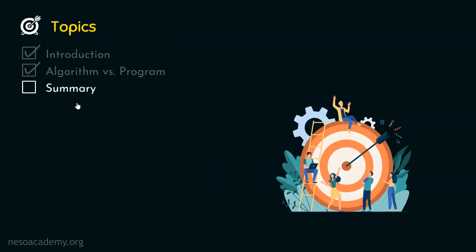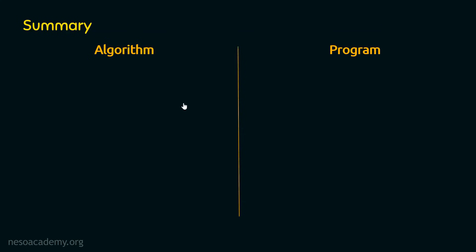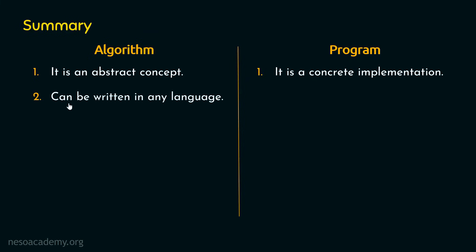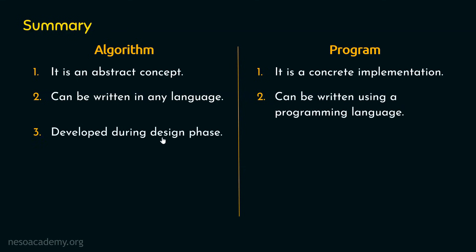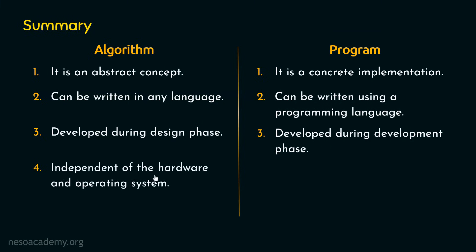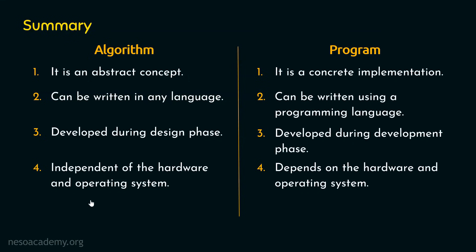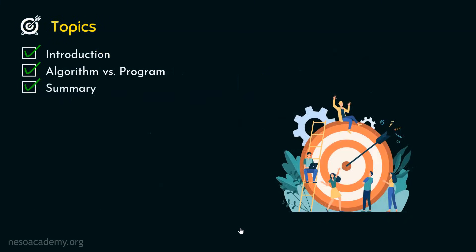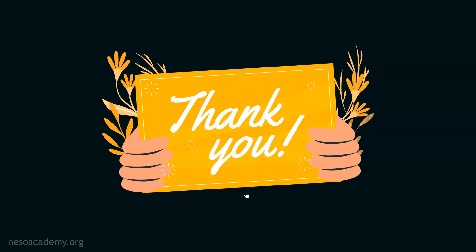Let's move to the summary of this lecture. An algorithm is an abstract concept; a program is a concrete implementation. An algorithm can be written in any language; a program must use a programming language. An algorithm is developed during the design phase; a program during the development phase. An algorithm is independent of hardware and OS; a program depends upon them. An algorithm is always analyzed; a program is always tested. These are the five differences between an algorithm and a program. Thank you for watching — I'll see you in the next one.